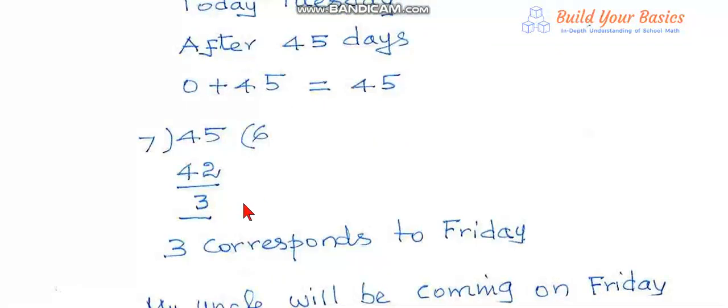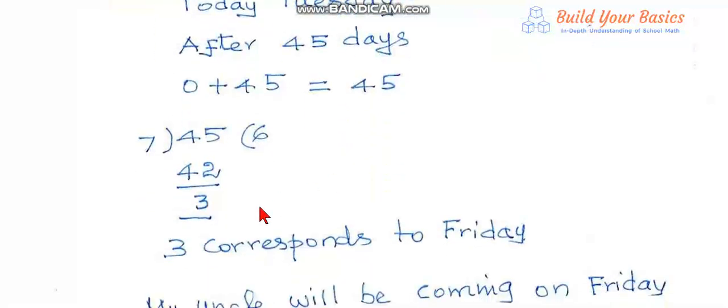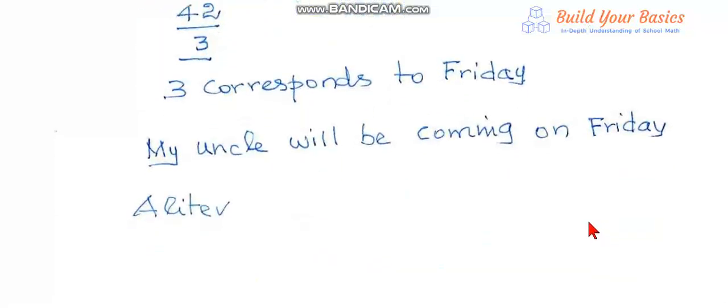Remainder is 3. Now this remainder 3 corresponds to Friday: Tuesday, Wednesday, Thursday, Friday. So 3 corresponds to Friday. My uncle will be coming on Friday.